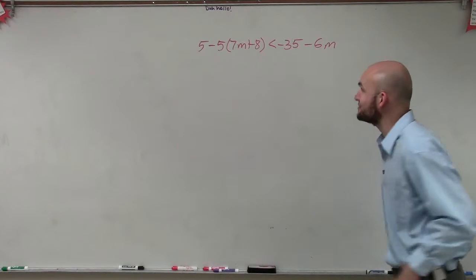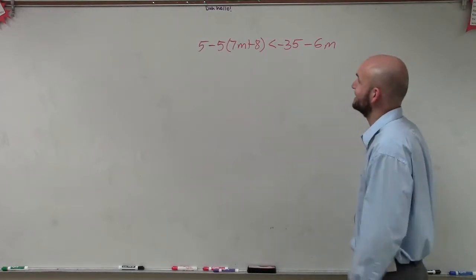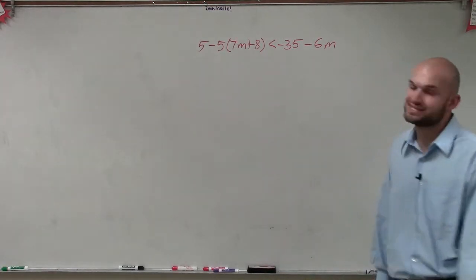Here we go. So what I have is 5 minus 5 times 7m plus 8 is less than negative 35 minus 6m.